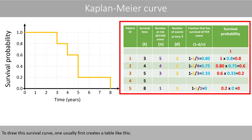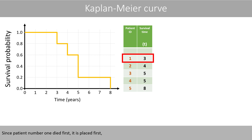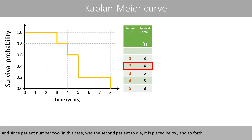To draw this survival curve, one usually first creates a table like this. To create such a table, we place one patient on each row and sort them based on their survival times. Since patient number one died first, it is placed first. Since patient number two was the second patient to die, it is placed below, and so forth.